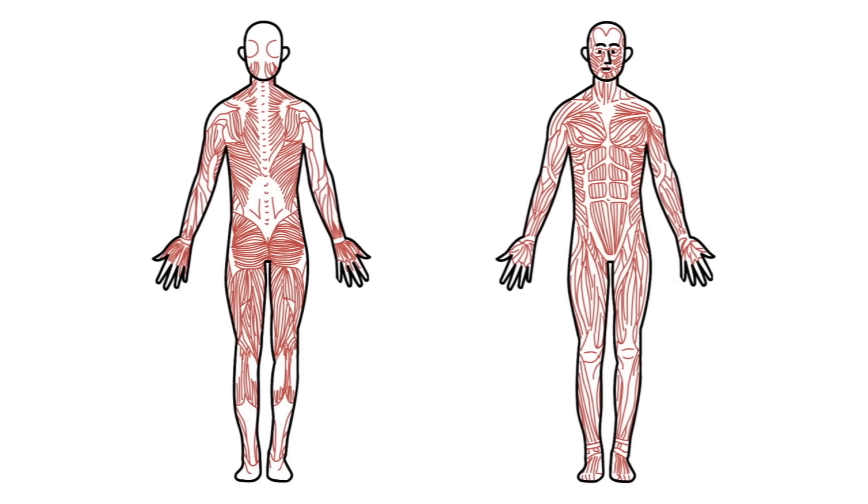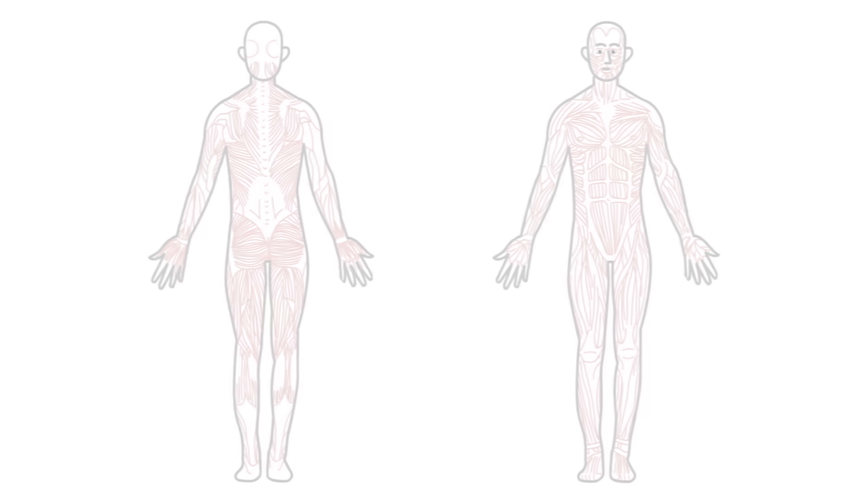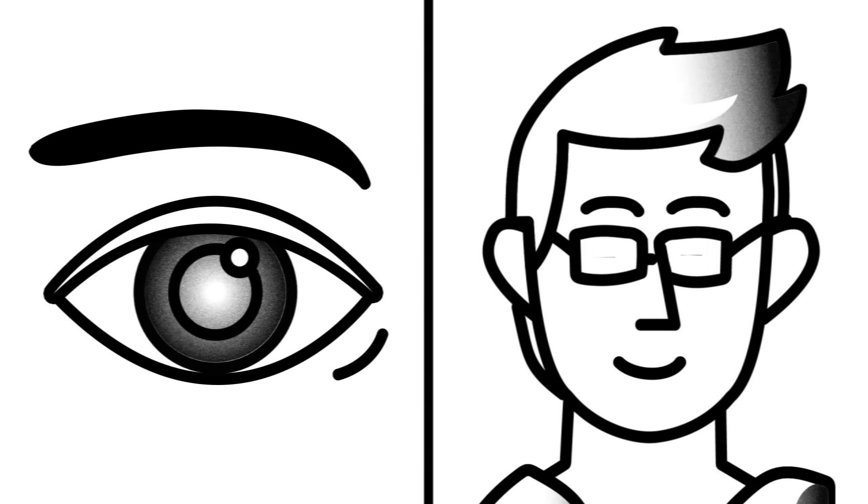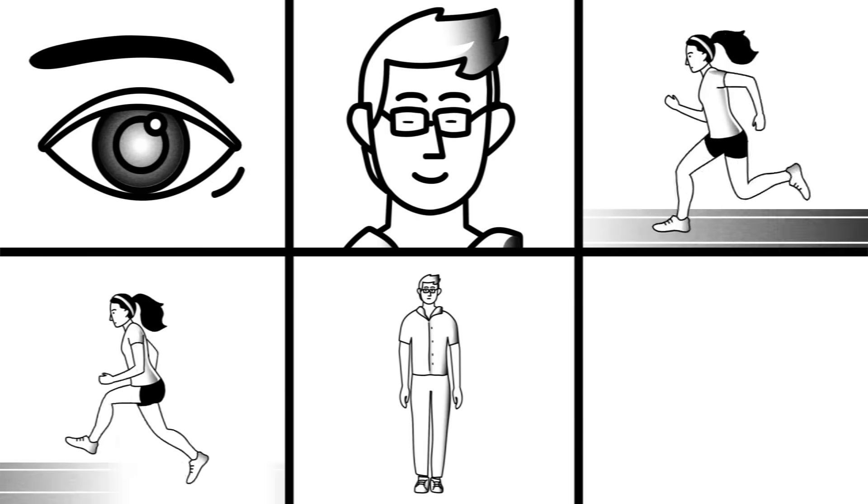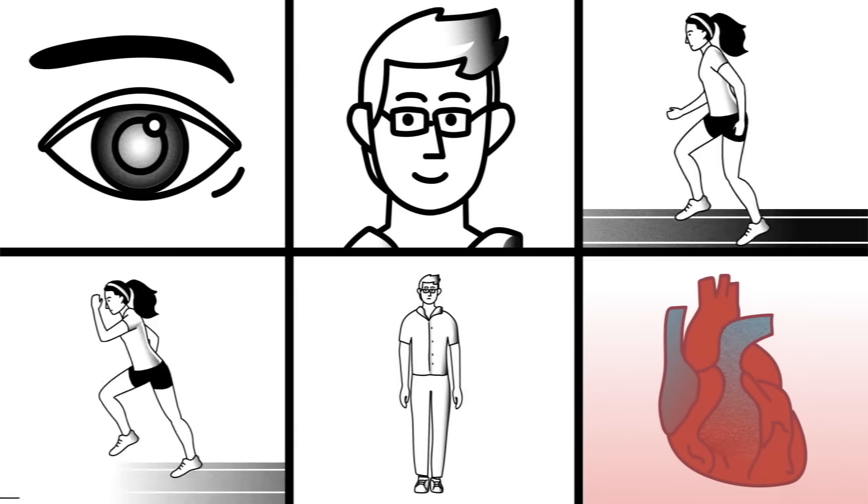This network of over 650 muscles covers the body and is the reason we can blink, smile, run, jump, and stand upright. It's even responsible for the heart's dependable thump.